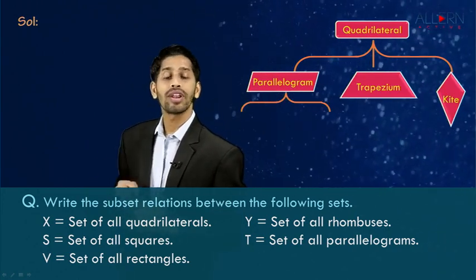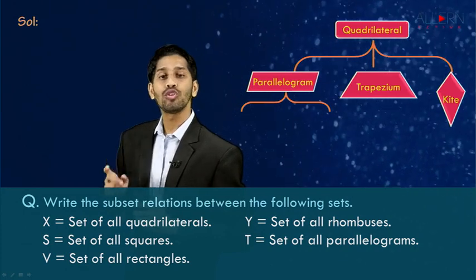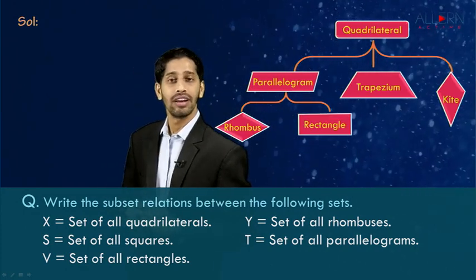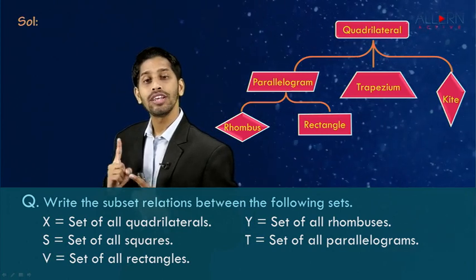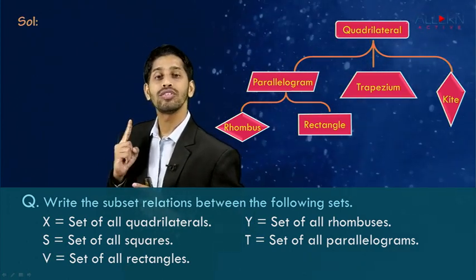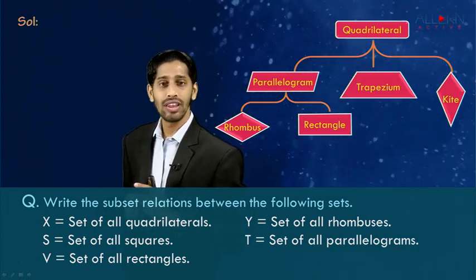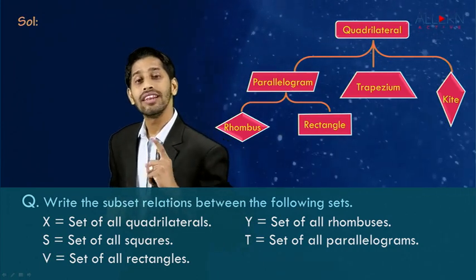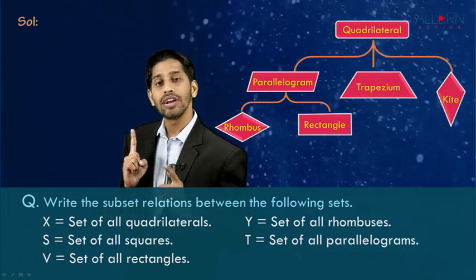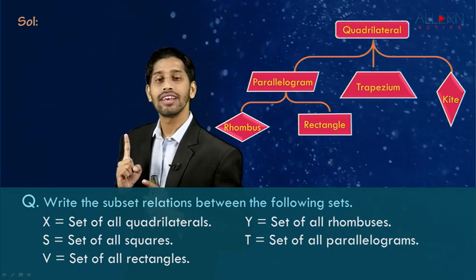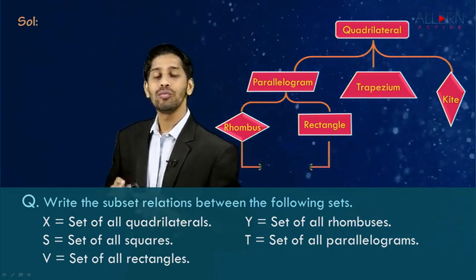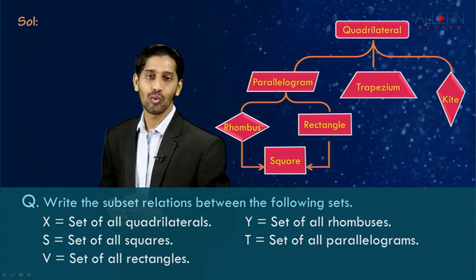Under parallelogram we have two more geometrical figures: rhombus and rectangle. When we combine the properties of rhombus and rectangle — in rhombus all four sides are equal, and in rectangle each angle is 90 degrees — combining these two properties gives us one more geometrical figure, that is a square.